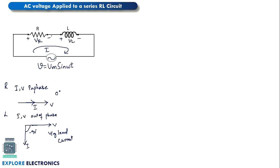Now we have connected these two in series, so we need to write the phasor diagram by taking the common current into account — current is the same through both elements. So I is the current flowing through the circuit, common through both the resistor and inductor. VR falls on the same line as I since VR and I are in phase. VL vector will be on the y-axis, so I and VL will be out of phase with a 90-degree phase shift. This is the voltage across the inductor and this is the voltage across the resistor.